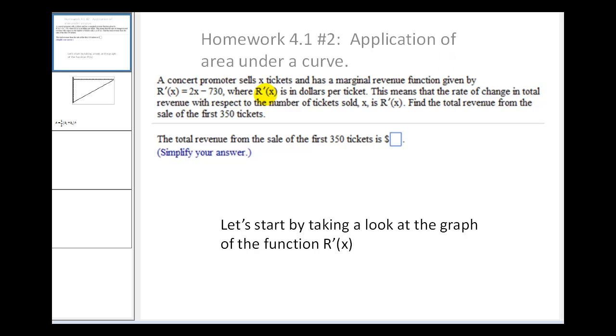A concert promoter sells x tickets and has a marginal revenue function given by this function here, where R'(x) is in dollars per ticket and x is the number of tickets sold. The question is, we want to find the total revenue from the sale of the first 350 tickets.